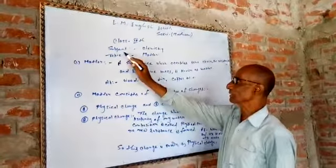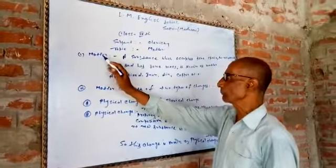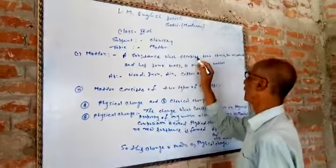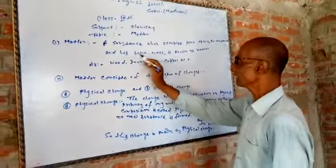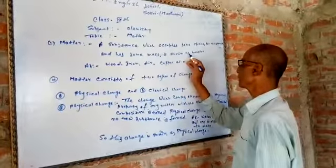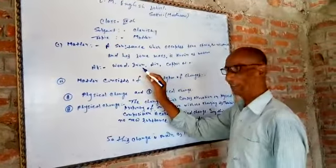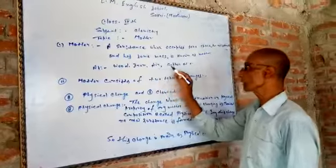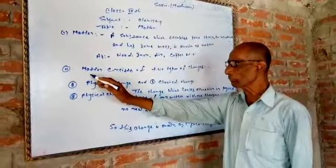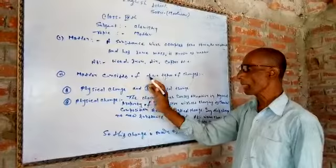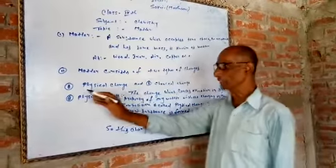Class 9, subject: Chemistry. Topic: Matter. Matter is a substance which occupies some space, offers resistance, and has some mass. Examples include wood, iron, air, and copper. Matter consists of two types of changes: first, physical changes, and second, chemical changes.